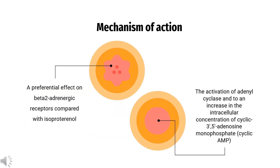Mechanism of Action: Ritadrine is a beta-2 adrenergic agonist. It binds to beta-2 adrenergic receptors on the outer membrane of the myometrial cell, activates adenyl cyclase to increase the level of cAMP, which decreases intracellular calcium and leads to a decrease of uterine contractions.